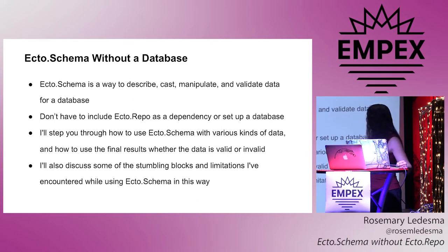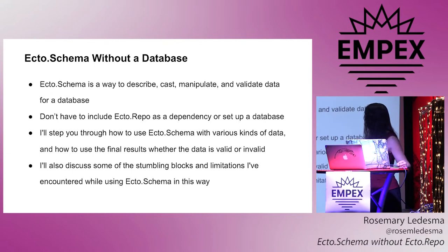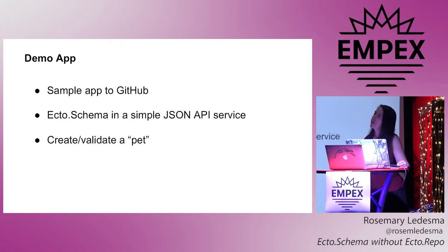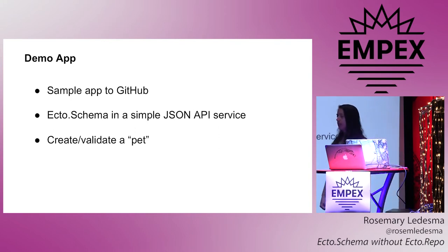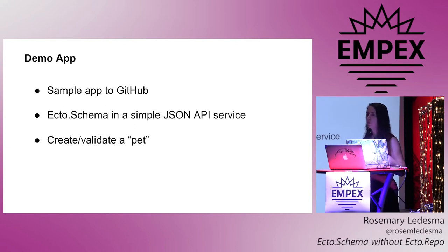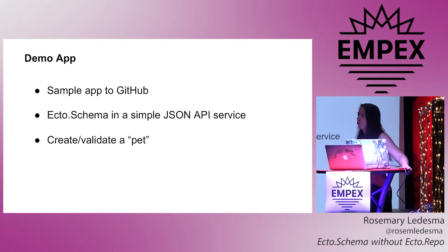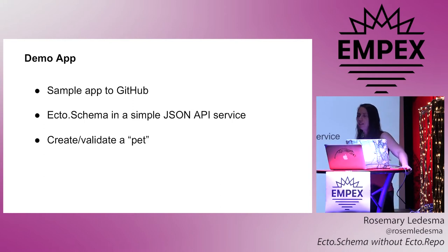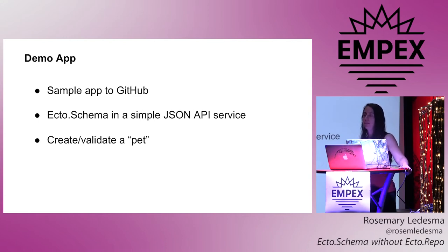I'm going to show you how to do that and what to do with the results you get from inputting data into ECTO schema, and talk about some of the problems I encountered. To demonstrate this, I've written an app and it's on GitHub — I'll give you the link. Anything you don't follow from this talk, you can figure out by looking at that. It's a really simple JSON API service where all you can do is create a pet object.